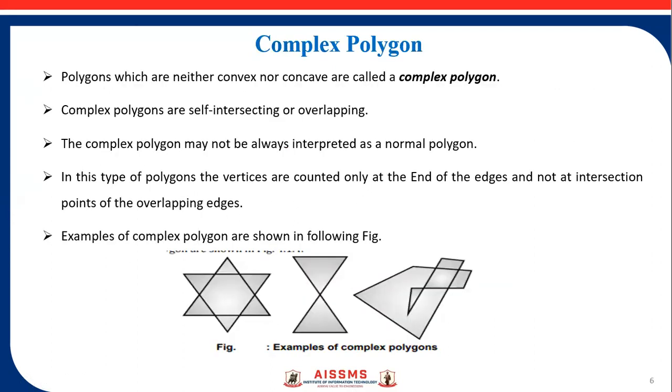Next is complex polygon. Polygons which are neither convex nor concave are called complex polygons. Complex polygons are self-intersecting or overlapping. We can consider any shape in the complex polygon like the star shape shown in the figure.